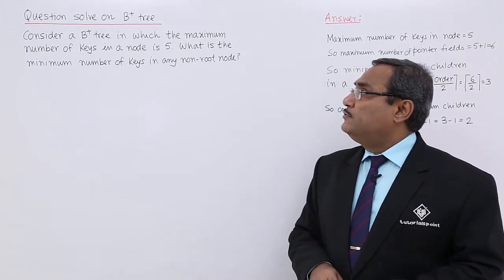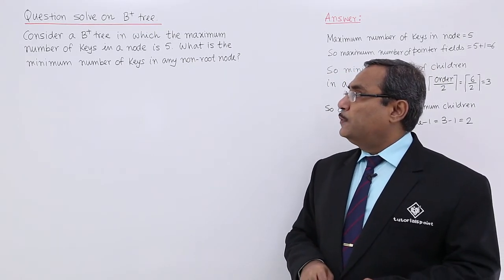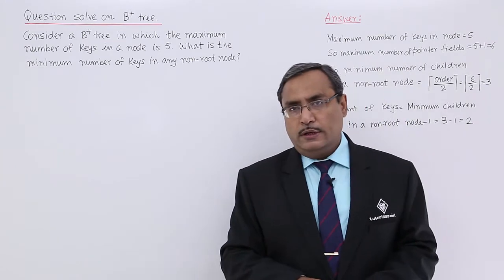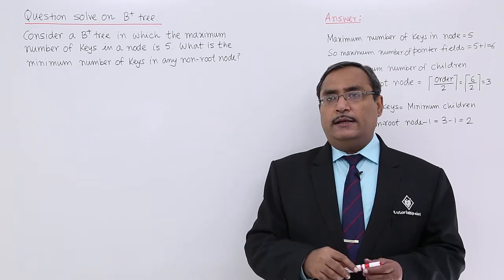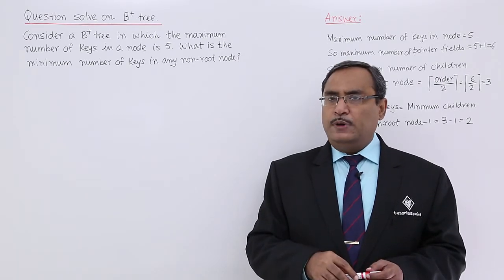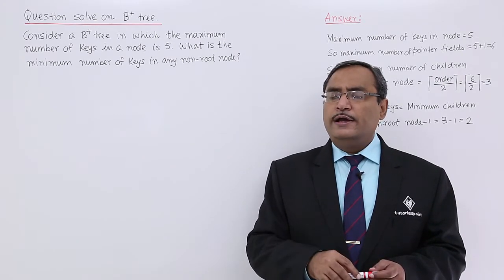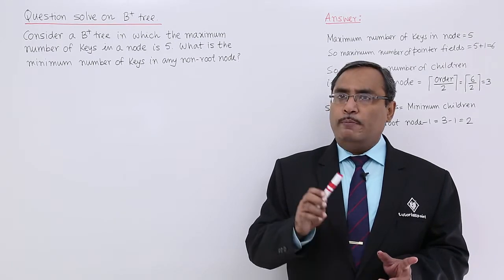Consider a B+3 tree in which the maximum number of keys in a node is 5. Here the maximum number of keys in a node is 5. That indicates that we shall be having 5 plus 1, that is 6 number of pointer fields in a node maximum.